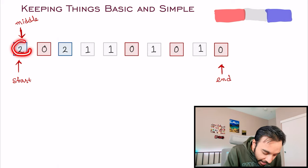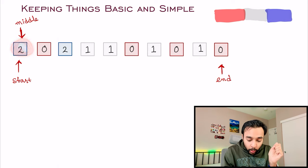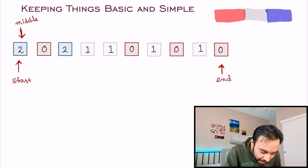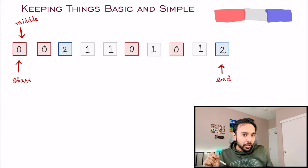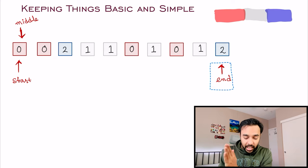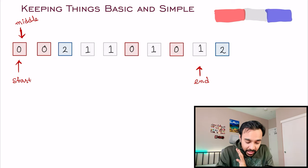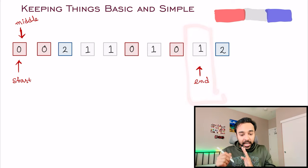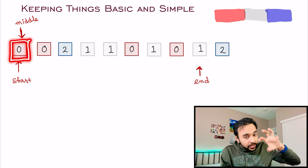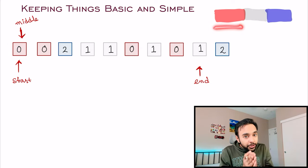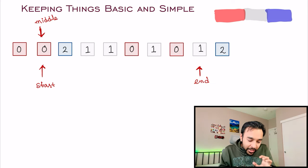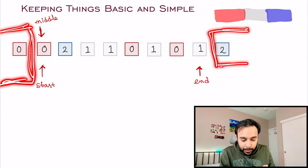Now start computing. Look at the first element — it is 2, which should go to the very end. Swap this 2 with the last element, then decrement the end pointer by 1 since that position is now taken care of. Come back to where we left off. Now we are looking at 0, which has to remain at the starting position — it is already correct. Advance both the start and the middle pointers one step ahead.